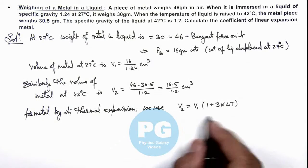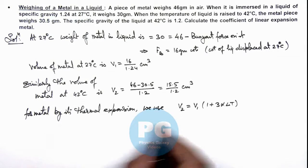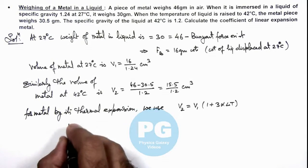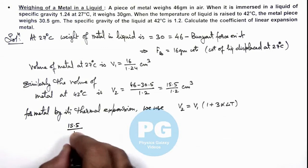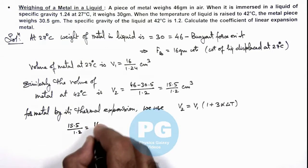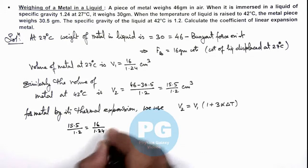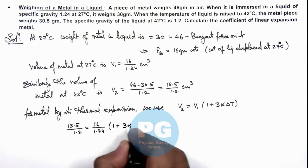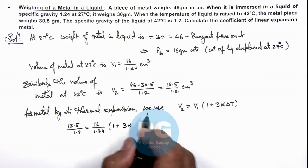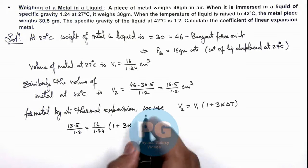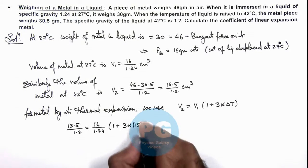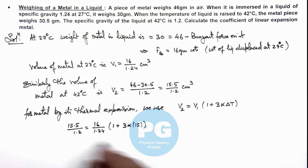If we substitute the numerical values, the value of V2 is 15.5 by 1.2, equal to 16 divided by 1.24, multiplied by 1 plus 3 alpha. The temperature difference between 27 and 42 is 15 degrees Celsius.